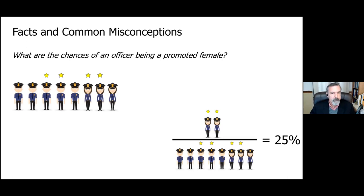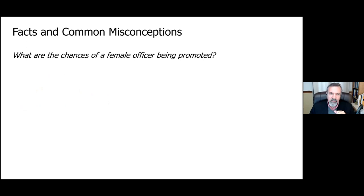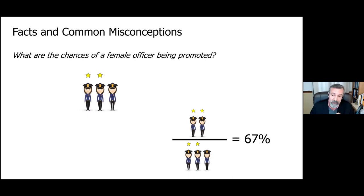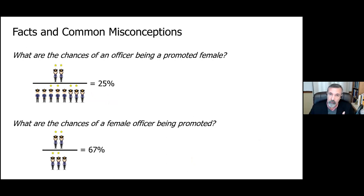But they asked the wrong question. The right question sounds very similar: what are the chances of a female officer being promoted? To ask that, you first look at all your female officers, and divide the number of promoted female officers by the total number of female officers. That number is 67%. The two questions sound almost the same in English but are very different statistically. The case was dismissed because once the question was conceptualized correctly, they realized there was no gender discrimination — at least according to these numbers.